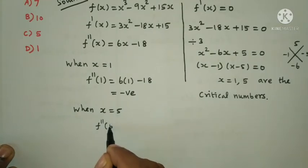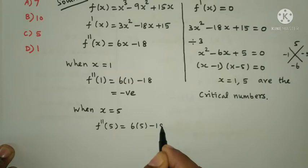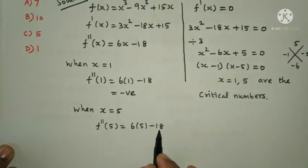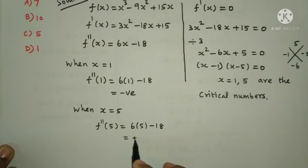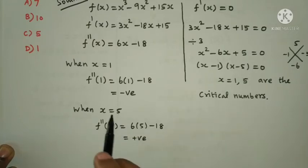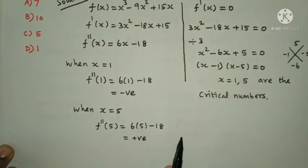When x equals 5, substituting into f''(x): f''(5) equals 6 times 5 minus 18 equals 30 minus 18 equals plus 12, which is positive. So x equals 5 gives a minimum.